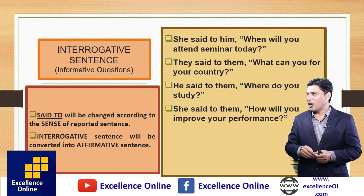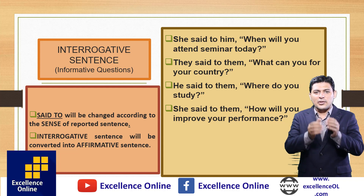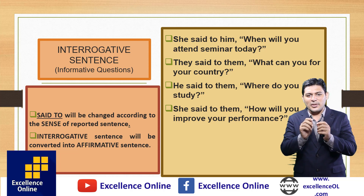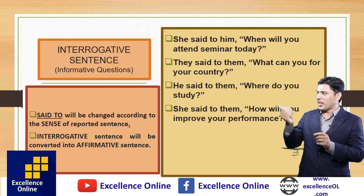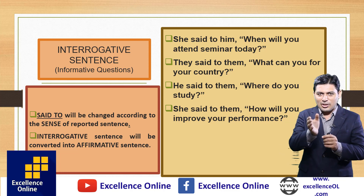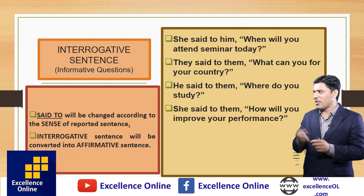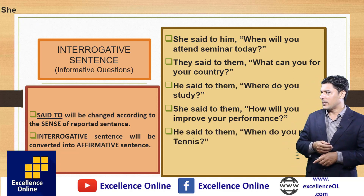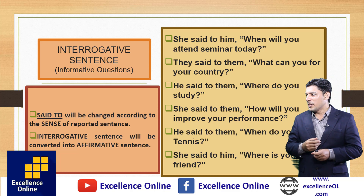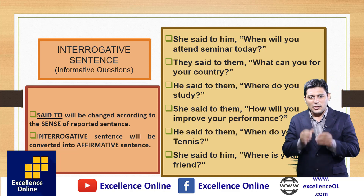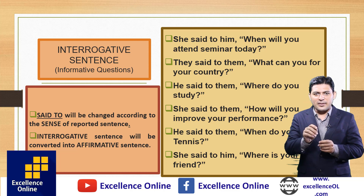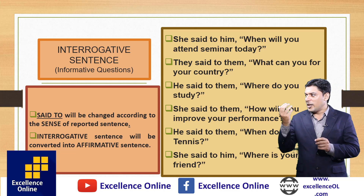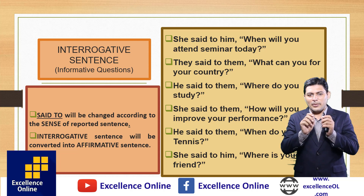Next example: 'She said to them, how will you improve your performance?' becomes 'She asked them how they would improve their performance.' The WH word 'how' remains the same without using 'that,' 'if,' or 'whether.' Last example: 'She said to him, where's your friend?' becomes 'She asked him where his friend was.'